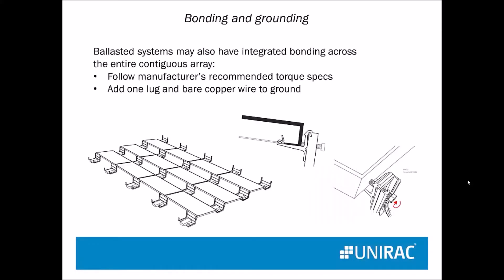Ballasted systems may also have integrated bonding — that is, everything is bonded together. However, you still need to run one lug and one bare copper wire to ground. Occasionally, an inspector will want more than one on a large array.